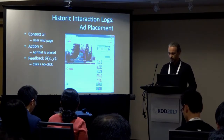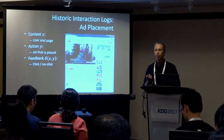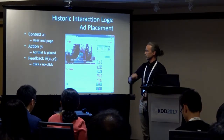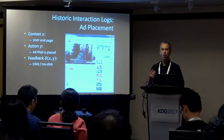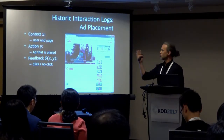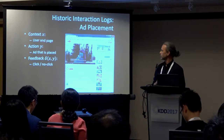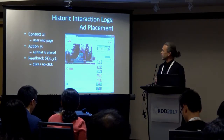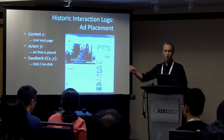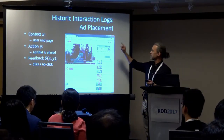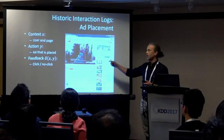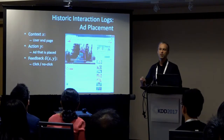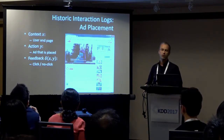Let me make this more specific and try to formalize it. Here's an ad placement system that needs to place an ad. There's some context in which this ad gets placed — a user and a particular page — and we call this context X. The current system makes a decision and takes an action to place a particular ad. What we get to see in response is the feedback that the user gives us — say, whether the user clicks on this ad or not.